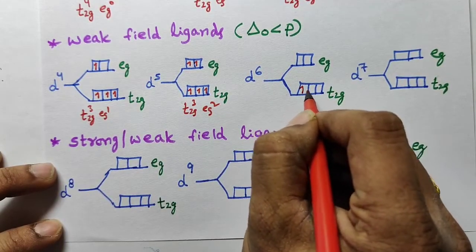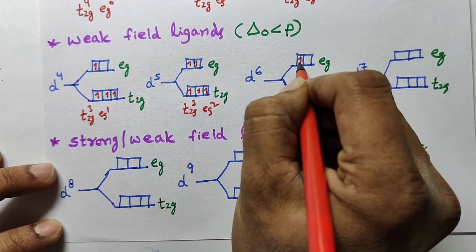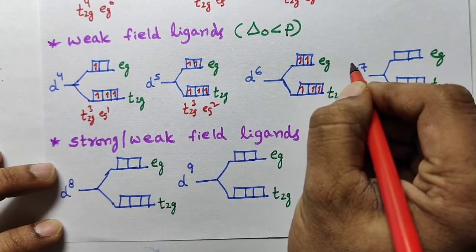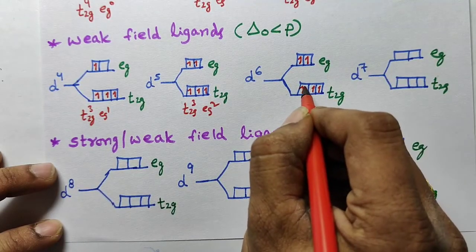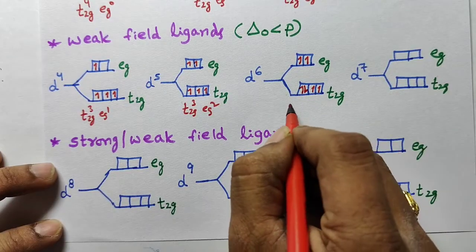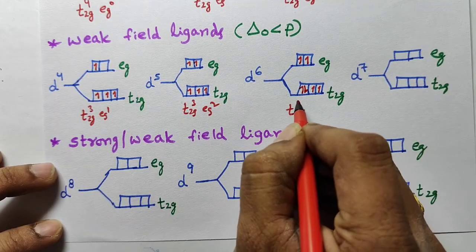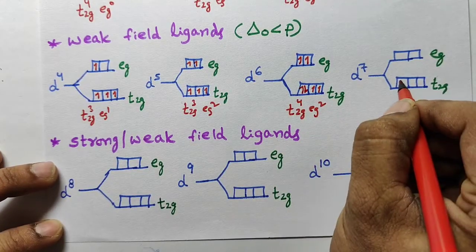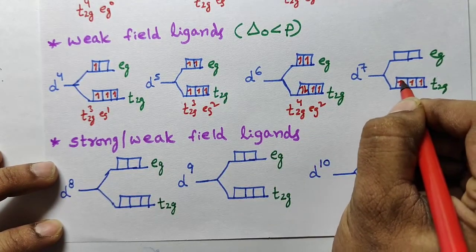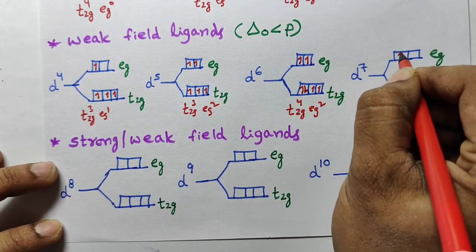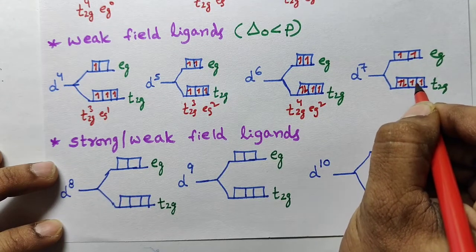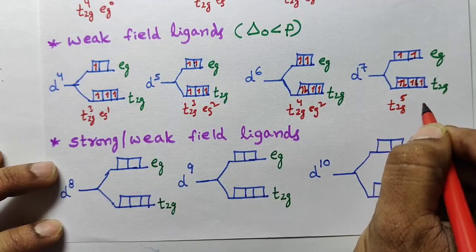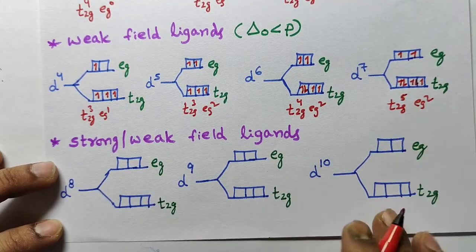For d6 with weak field ligand: t2g is half filled and eg is also half filled first, then the sixth electron pairs in t2g — giving t2g⁴ eg². For d7 with weak field ligand: one, two, three in t2g, four, five in eg, then six, seven pair into t2g — giving t2g⁵ eg².